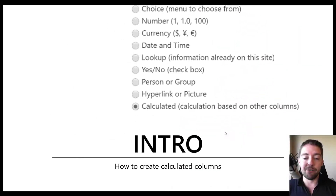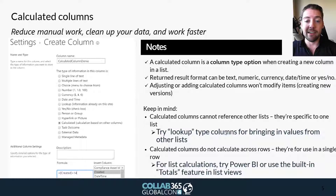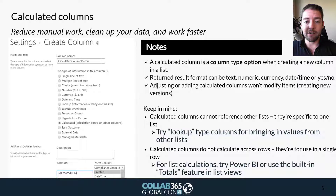As an intro for those less familiar with the calculated column type — it's a column type option when you go to create a new column in your list. Just look for 'calculated,' and then your result could be a format that you choose. You put the formula in there and then choose whether you want it returned as a number, formatted currency, date/time, and so forth, just like you would with a normal column. One nice thing is that when calculated columns perform their calculations, it's instantaneous and doesn't create new versions as if you had modified the item.